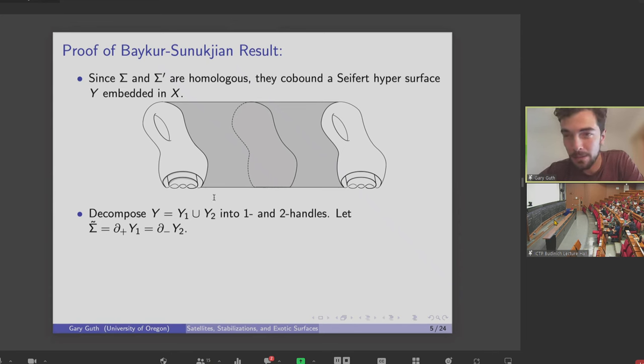So Y is a 3-manifold. So it's going to be built out of some 1-handles and some 2-handles. And let sigma tilde be the top boundary of the 1-handle cobordism and sort of the bottom boundary of the 2-handle cobordism.